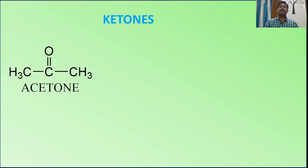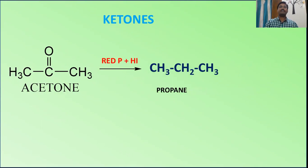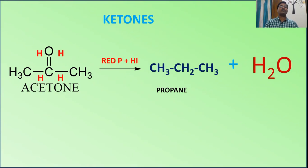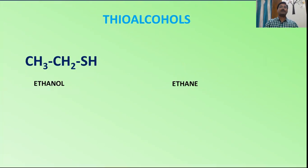For ketones — acetone, whose IUPAC name is propanone — when treated with our reagent, it converts into propane, and the oxygen converts into water. Two hydrogens are needed for the oxygen and two for the carbon, so four hydrogens are required in total.